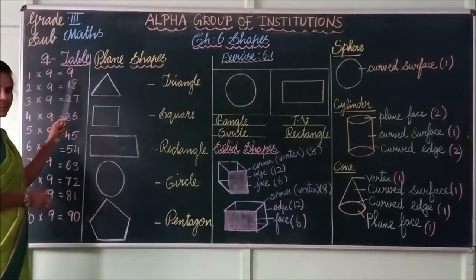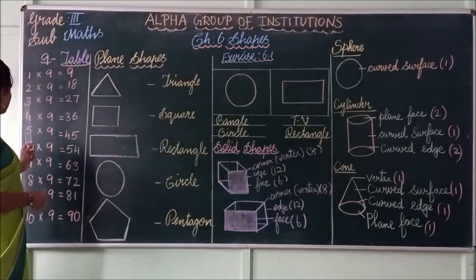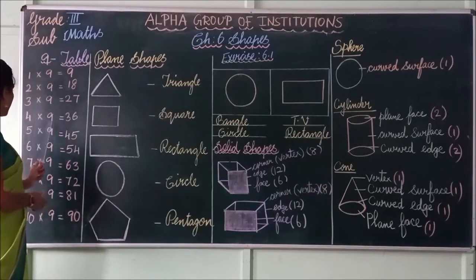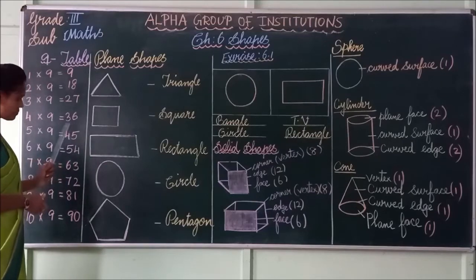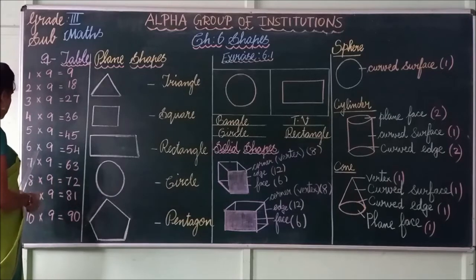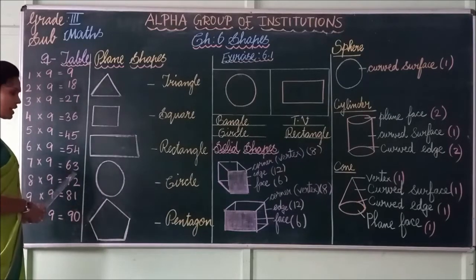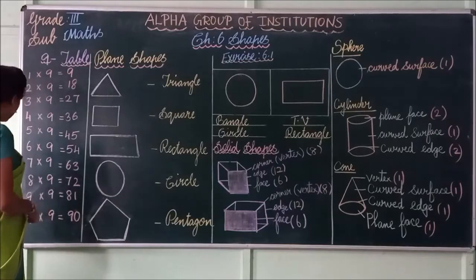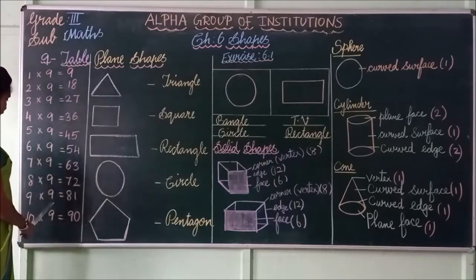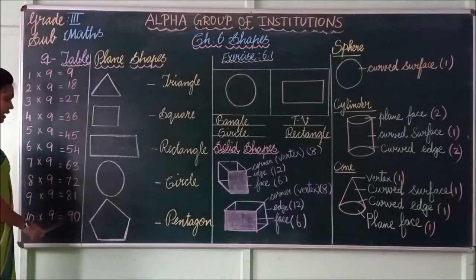1 nine is 9. 2 nines are 18. 3 nines are 27. 4 nines are 36. 5 nines are 45. 6 nines are 54. 7 nines are 63. 8 nines are 72. 9 nines are 81. 10 nines are 90.